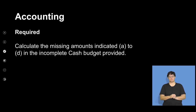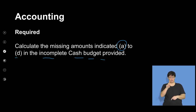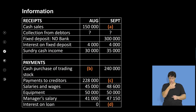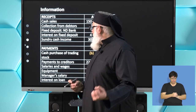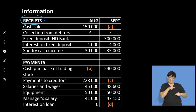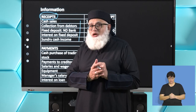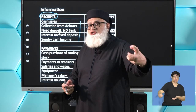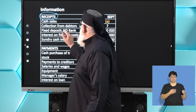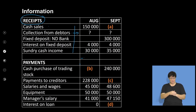We are expected to calculate the missing figures A to D in the incomplete cash budget. Under receipts you have cash sales, collections from debtors — those figures from the debtors' collection schedule fit into the cash budget here. There's also a fixed deposit that has matured, meaning money has come into the business, plus interest on the fixed deposit. Under payments: cash purchases of trading stock, payments to creditors, salaries and wages, equipment, manager salary, and interest on loan.